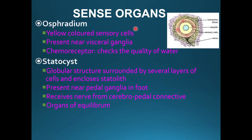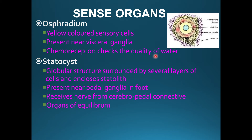In UNIO, there are many sorts of sense organs. The first is the Osphradium. Osphradium is located near the visceral ganglion. It is a yellow-colored sensory cell organ and it contains chemoreceptors, because it checks the quality of water.